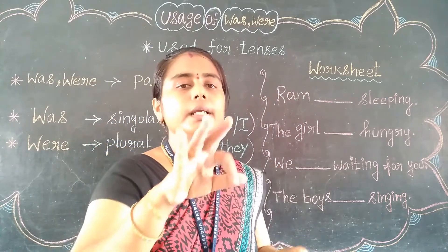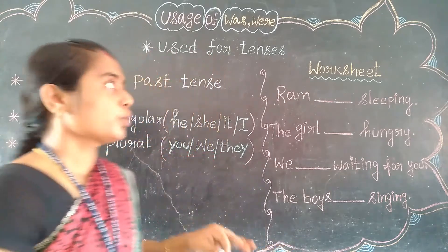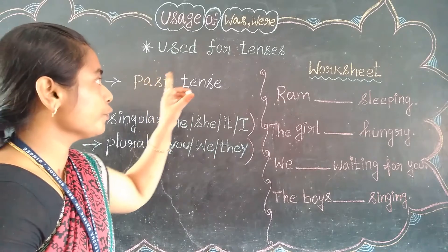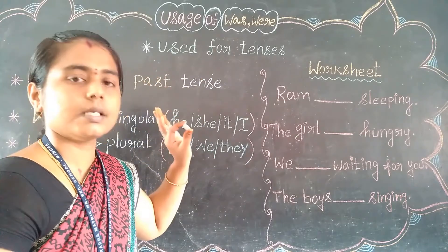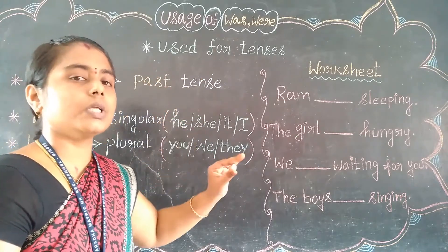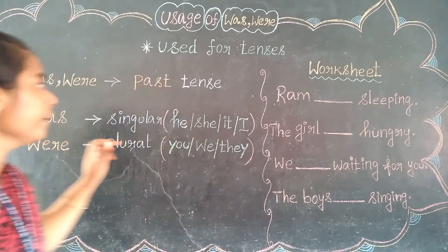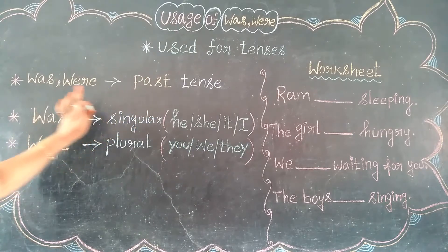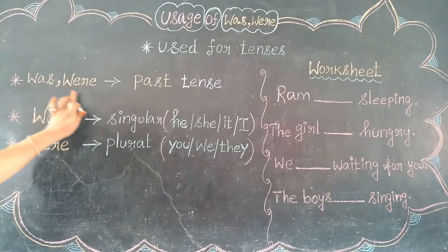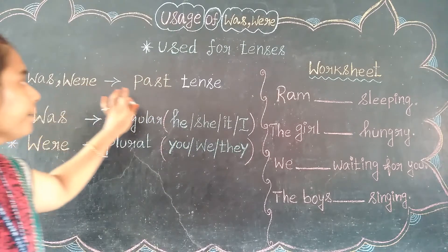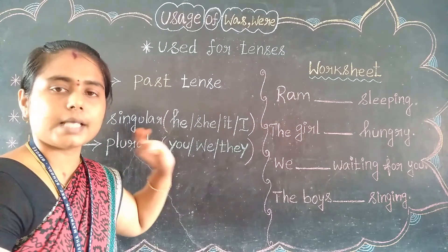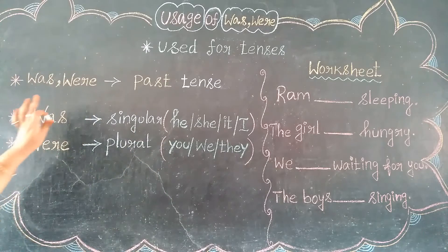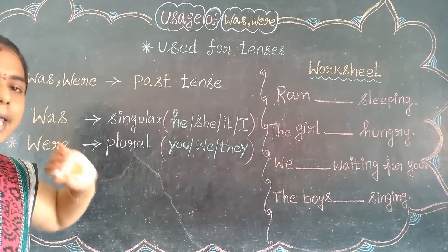So, these are all the three tenses. 'Was' and 'were' are used for tenses. In which tense are they used? Let's see that. In past tense — 'was' and 'were' are used in past tense alone. We use them in past tense alone.